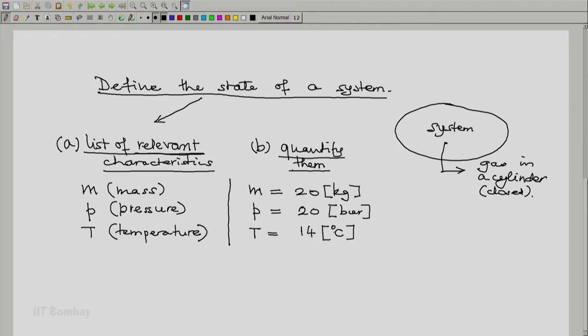So, when we do this, when we have a list of relevant characteristics and the quantity or the numbers associated with them, we say that we have defined the state of our system.